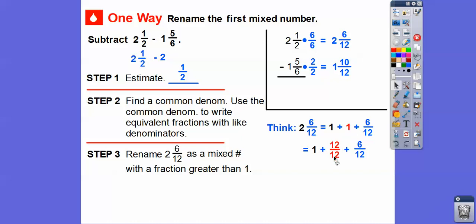This one is going to be twelve over twelve. So here's the two — we're changing one of the ones to twelve over twelve. We can add those to make it eighteen over twelve. So two and six-twelfths is the same as one and eighteen-twelfths, because twelve-twelfths is that one, plus the six-twelfths. What I tell my students is: you borrow from the two, it becomes a one, and then your new numerator is just the addition of the twelve and six — you get eighteen-twelfths.